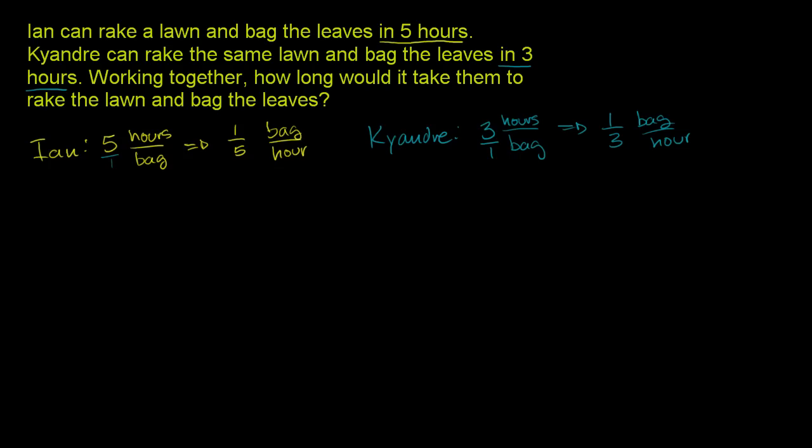Now, what's their combined rate? Ian can do one-fifth of a bag per hour, and Keandre can do one-third of a bag per hour. So what is this going to be equal to? We find a common denominator here. The least common multiple of five and three is 15, so let's put it over 15.